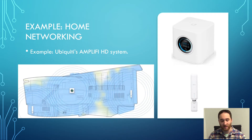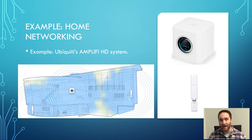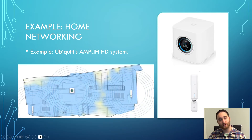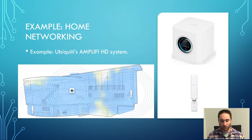Here's an example you might deploy in a home: Ubiquiti's AmpliFi HD system. This box here is your router, base station, network controller, and uplink access point all in one. It connects to your modem and replaces your existing router. You then deploy these smaller mesh point units around the house to extend coverage. In this example, the router base station provides its main Wi-Fi signal, and the mesh points throughout the house uplink back to it.